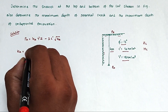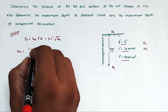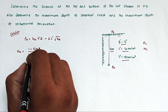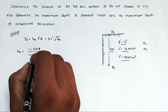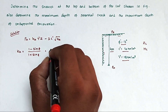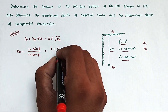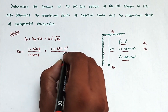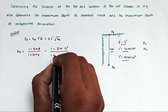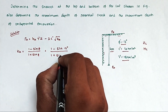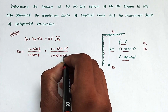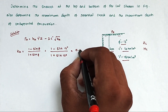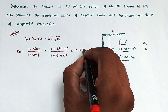The formula for KA is (1 − sinφ) divided by (1 + sinφ). Substituting φ = 12 degrees: KA = (1 − sin12°) / (1 + sin12°). Solving this, we get KA = 0.656.